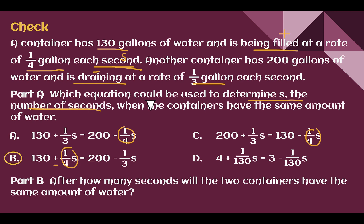Another container has 200 to start and it is draining at a rate of one third gallon each second. Draining means it's losing water. So we should see that it starts at 200 and it's losing one third each second. A is close, but it just has our fraction amount switched. B is our correct answer.